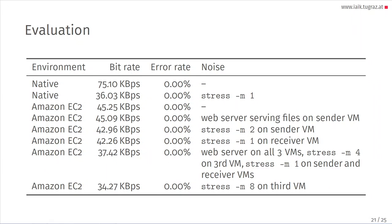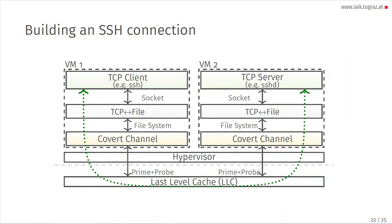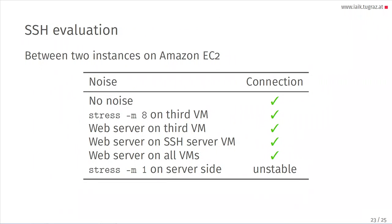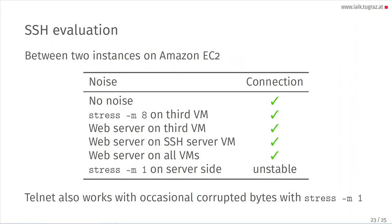With this essentially perfect covert channel — almost like having a network between virtual machines — we built an SSH connection between them. We used sockets for TCP clients and TCP server, and the actual zeros and ones were transmitted via the covert channel through the last-level cache. We evaluated how robust this was between two instances on Amazon EC2. It was stable for almost all cases. The worst case was stress M1 on the server side, which caused errors — and as soon as you have one error on an SSH connection, the connection drops. We also tried Telnet, which works with occasional corrupted bytes under stress M1, though running a shell over Telnet with possible bit errors is not recommended.